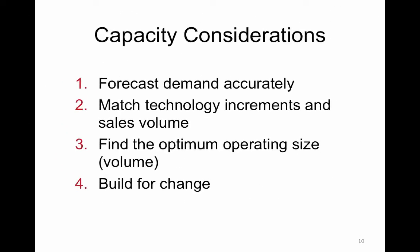Capacity considerations: forecast demand accurately — measure, measure, measure — and try to get an accurate read on what is happening in your process. Match the technology and equipment, find the optimal operating size, and decide whether to do batches or not. Then build for change: consider those things and build your processes and make changes accordingly.